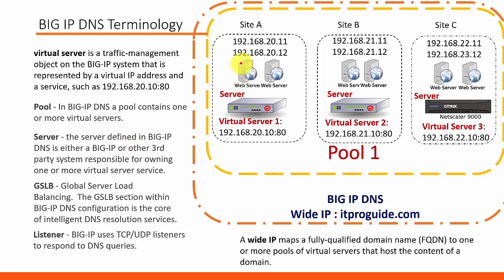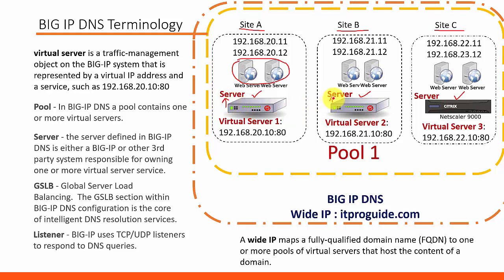Consider a website running at three sites: site A, site B, and site C, with two physical servers at each site. Sites A and B are balanced using F5 local traffic management, while site C uses another vendor for load balancing. Whoever is responsible for load balancing is called a server in Big IP DNS — it is not mandatory that it be F5 LTM; it can be any device responsible for load balancing.